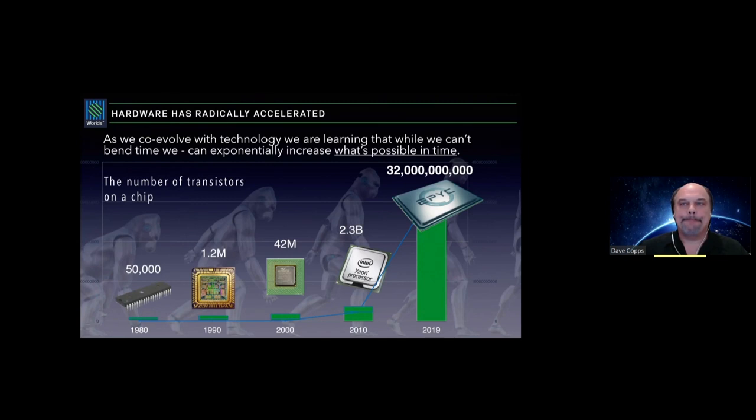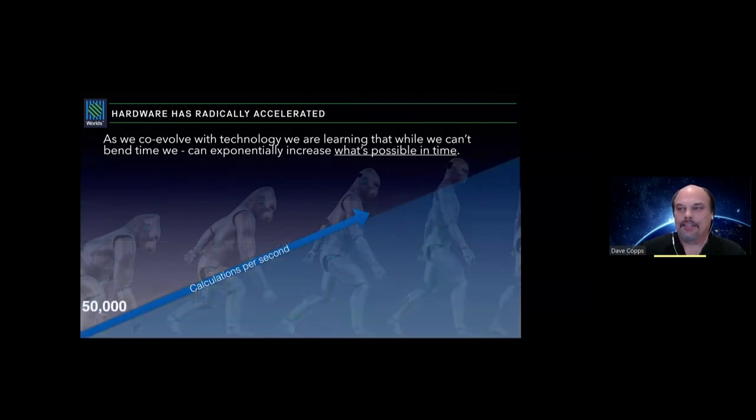Because of advances in hardware, something incredible is happening. We're not bending time, but we're absolutely transforming what's possible in time. With over 32 billion transistors on a chip today, we're able to have calculations per second over 200 quadrillion. To put it in perspective, if every person on earth completed one calculation per second, it would take 330 days to do what the Department of Energy Summit supercomputer can do in one second.